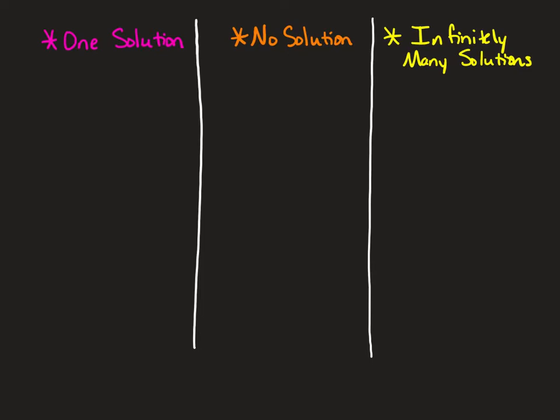We're going to look at characteristics of finding one solution, no solution, or infinitely many solutions when dealing with a system of equations. We can see a solution by graphing both equations. For one solution, you'll graph two lines and the lines cross. Sometimes they don't cross on the coordinate plane you're given, but you can tell the lines are slanting toward each other and at some point will cross.